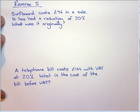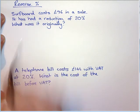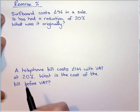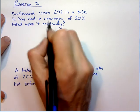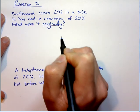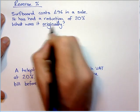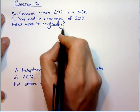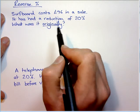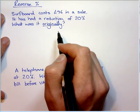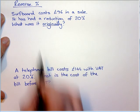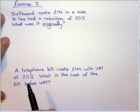Hi guys, now we're going to have a look at reverse percentages. This is really quite easy to detect because it's always going to be talking about what we call an original price, or what was it before this happened. A reverse percentage, a lot of people think can only happen when it's decreased, but it actually can happen when it's increased as well. So I'm going to show you an example for both.